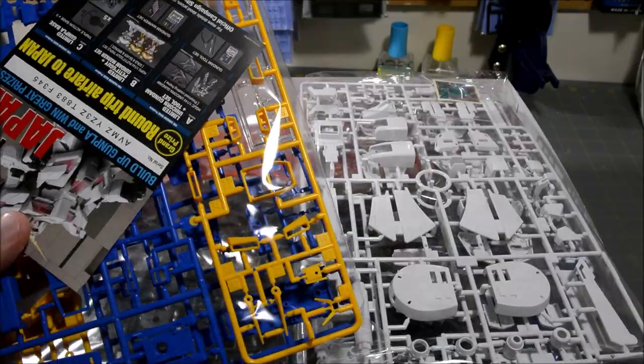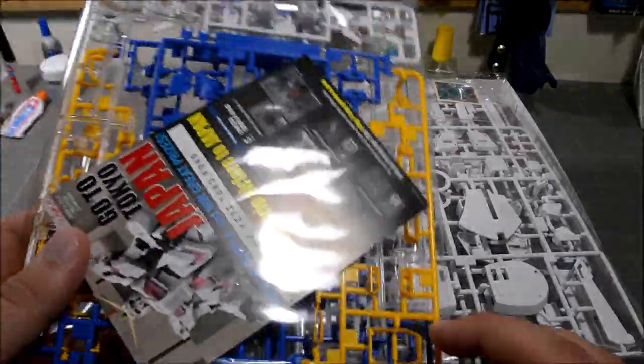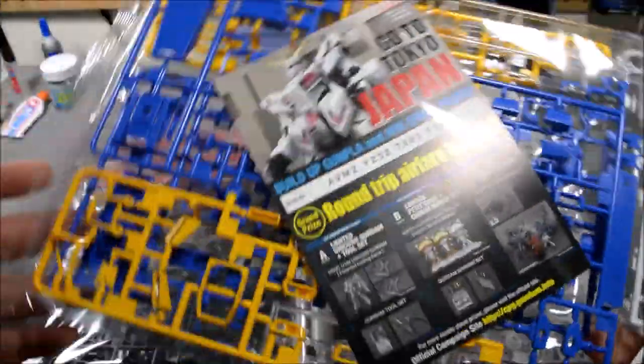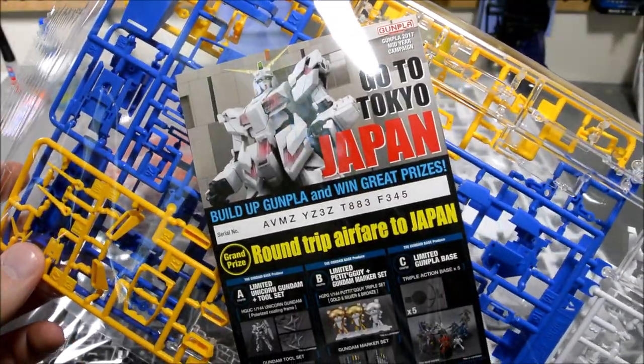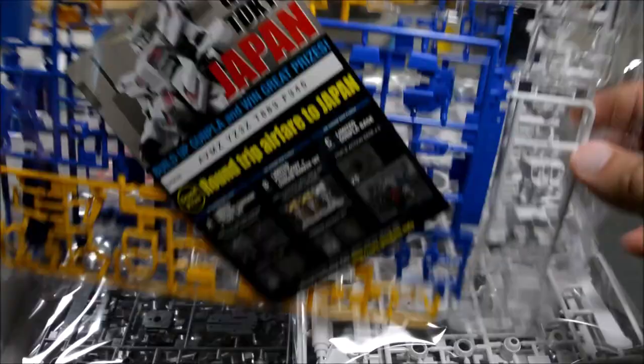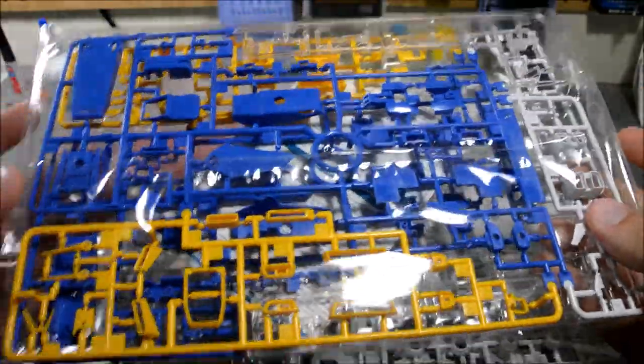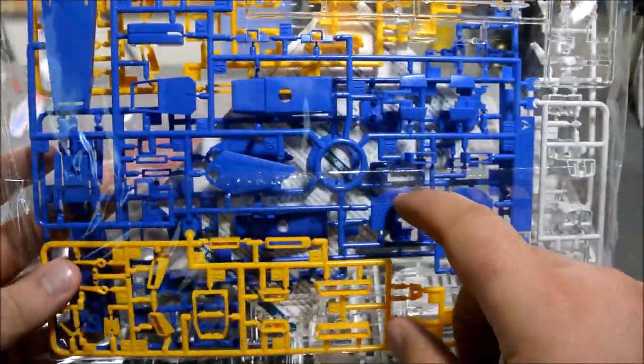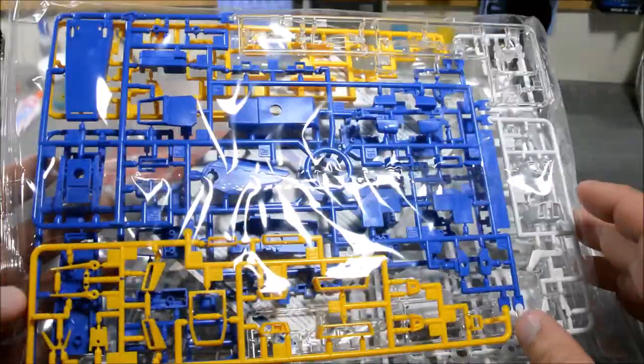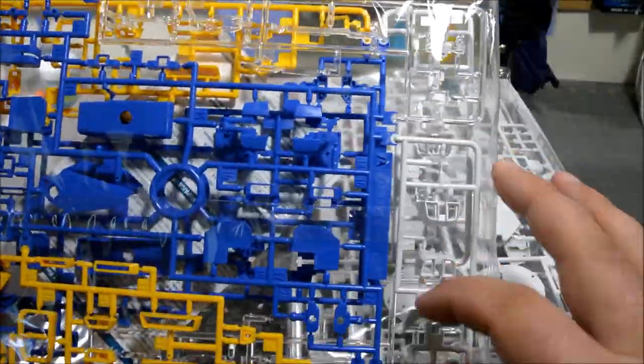So here's the A runner, actually I think two A runners, yeah identical. That's the little Gundam.info campaign thingy. Don't bother copying that serial number because I already submitted it. You got the blue parts, yellow parts.